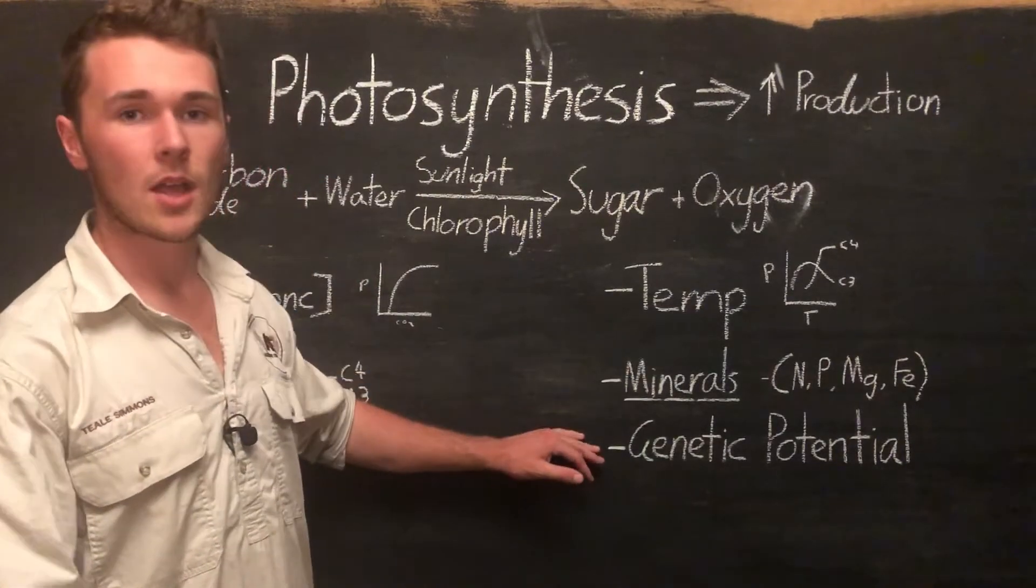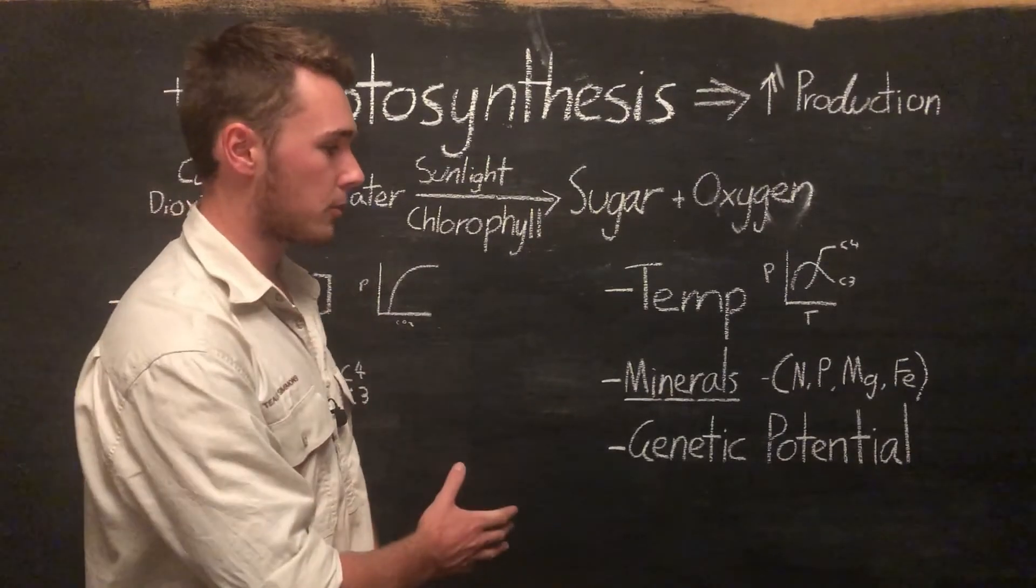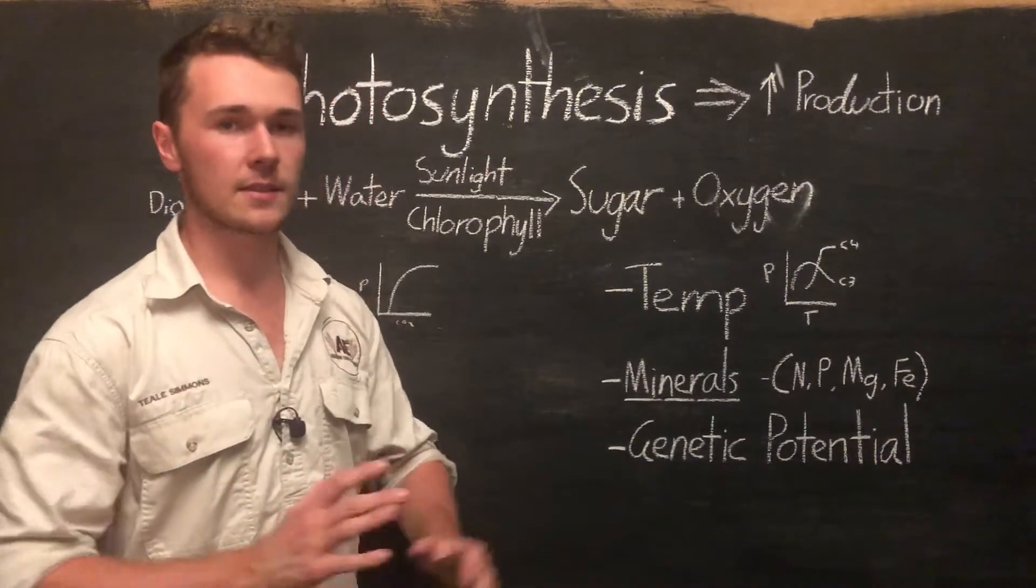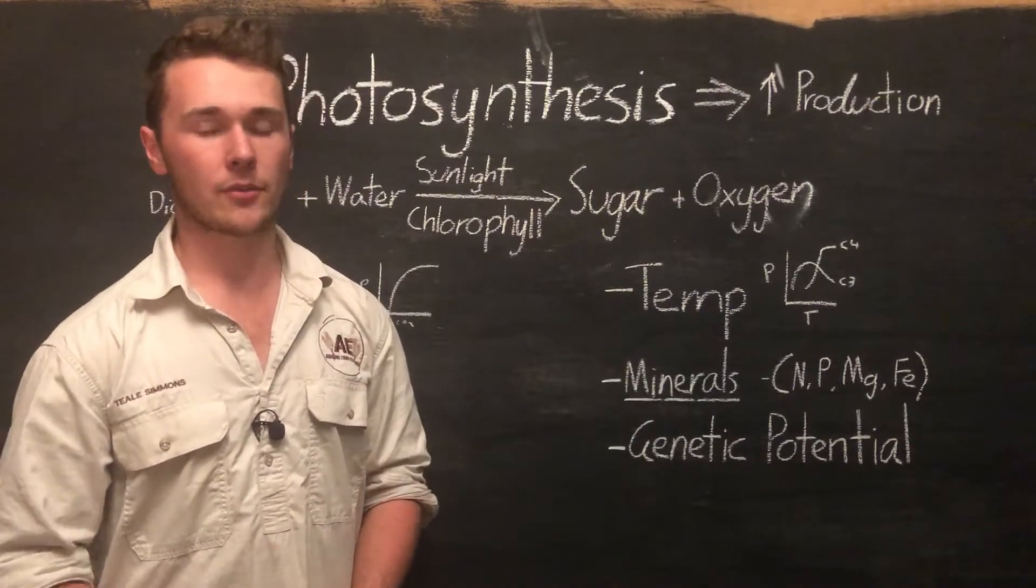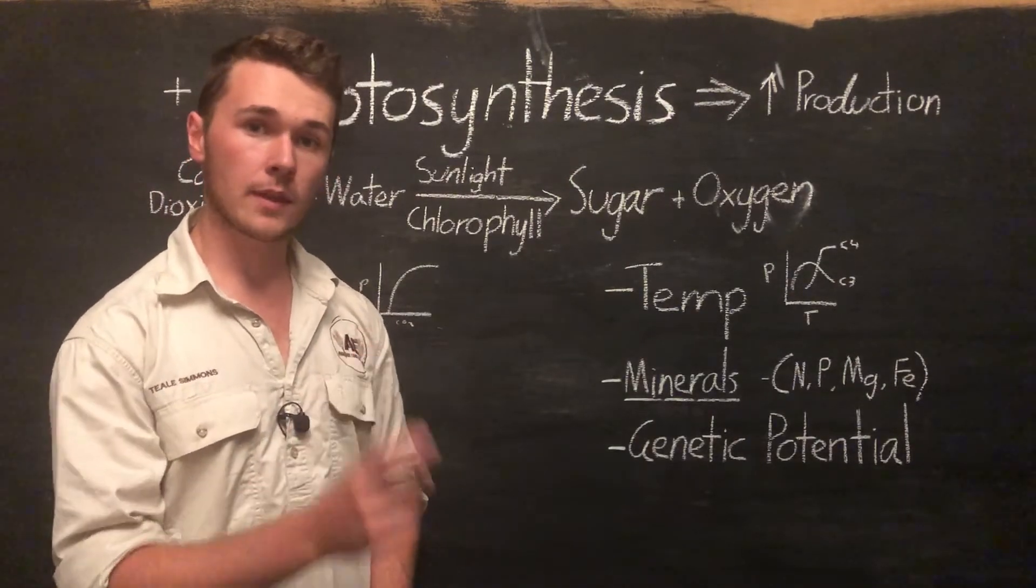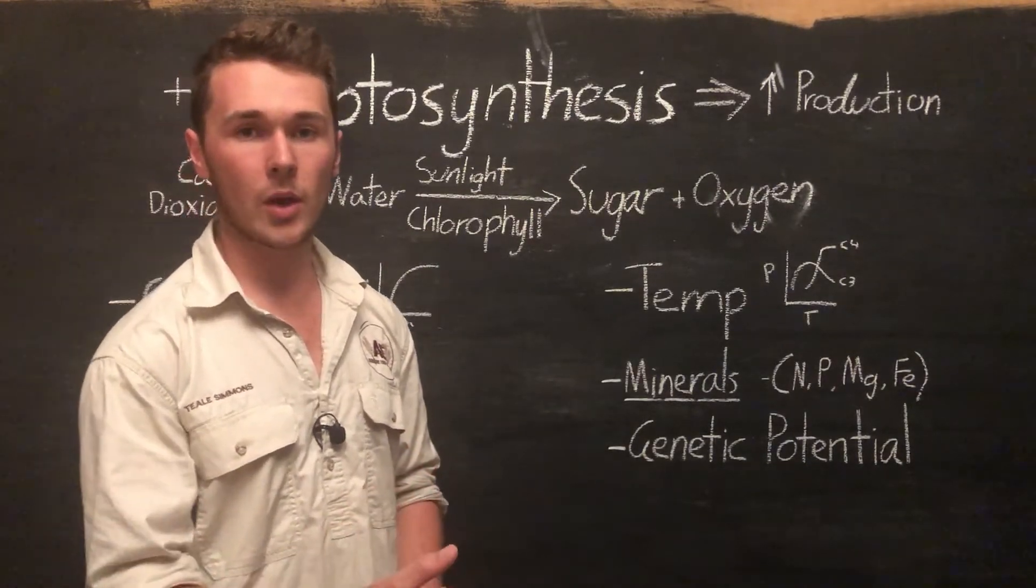Last, we have the genetic potential of our plants. This is actually another really significant one, and this allows the plants to set the stage for everything else to occur. For example, if we have a variety of corn with a really thin leaf and then another variety with a wide leaf, the wider leaf is going to photosynthesize more.